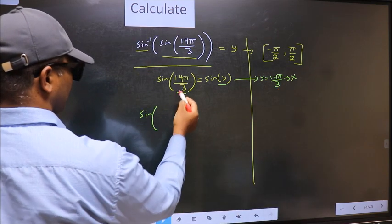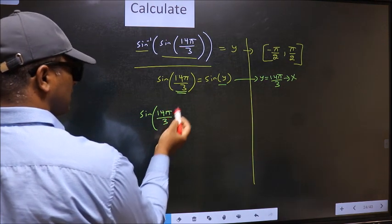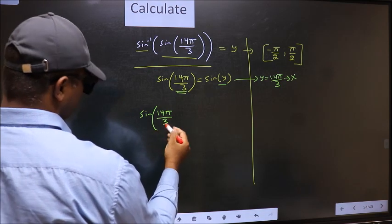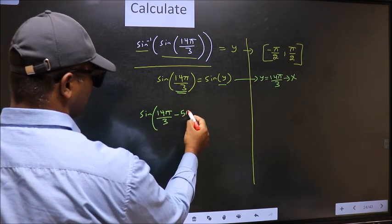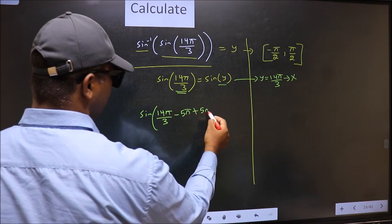sin(14π/3). 14π by 3 is not lying in that interval. We should decrease it. So we subtract minus 5π. Whatever I subtracted I should also add the same thing.